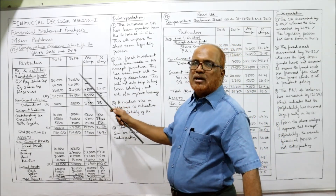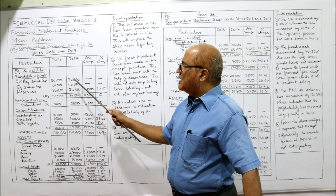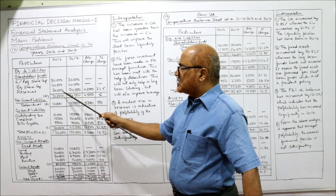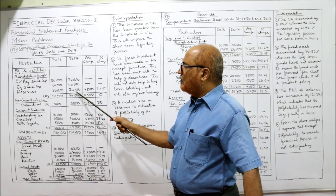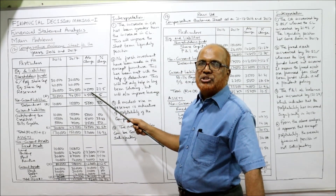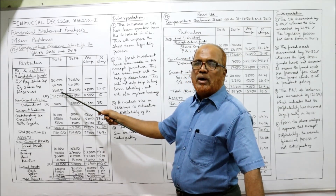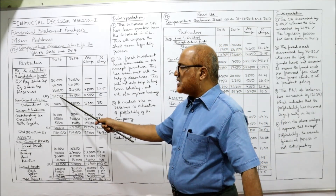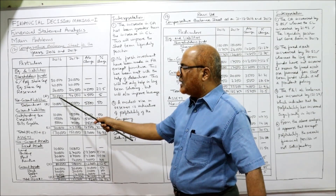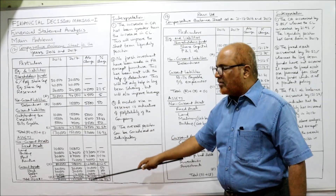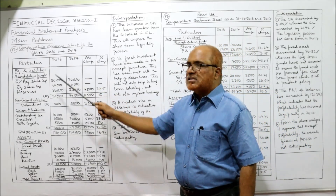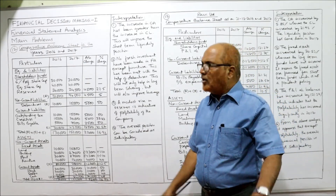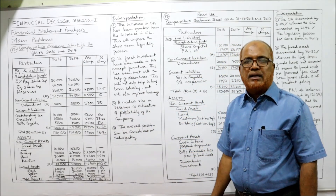Now we find the absolute change and percentage change. Absolute change is current year value minus last year value. For preferential capital: 30 minus 30 is nil — no change. For equity share capital: no change. For reserves: last year 20,000, current year 24,500 — absolute change is 4,500. Percentage change: 4,500 divided by 20,000 into 100 equals 22.5%. Total shareholders' fund: 94,500 minus 90,000 = 4,500, giving 5% change. Absolute change divided by last year figure into 100 gives the percentage change.